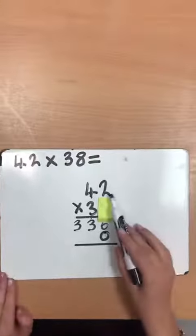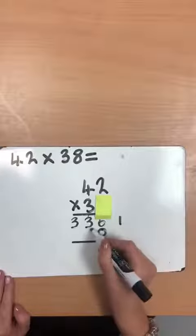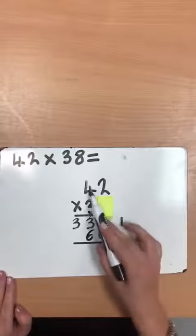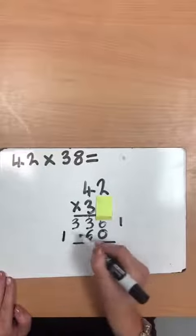So they're going to do two multiplied by three tens, which is six tens. And four tens multiplied by three tens, which is 12 tens.